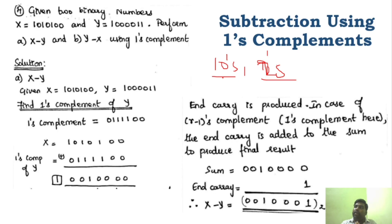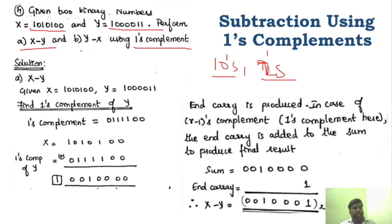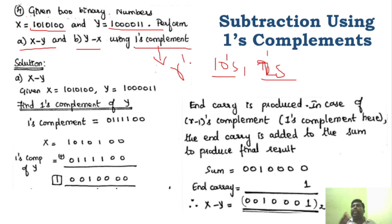We find r minus 1 complement. The question here is: you are given x value and y value, and you have to find x minus y and y minus x using one's complement. For the direct one's complement method, the r complement is the one's complement itself. So for x minus y, first what we have to do is find r's complement of y — r's complement of y is the one's complement of y.